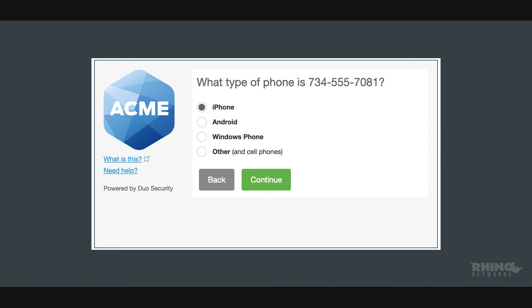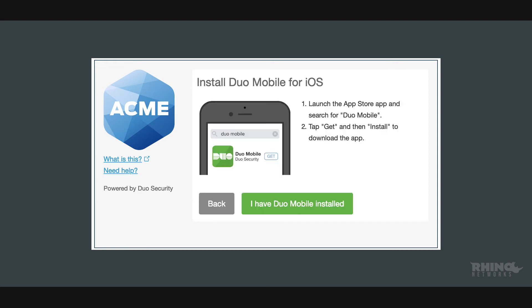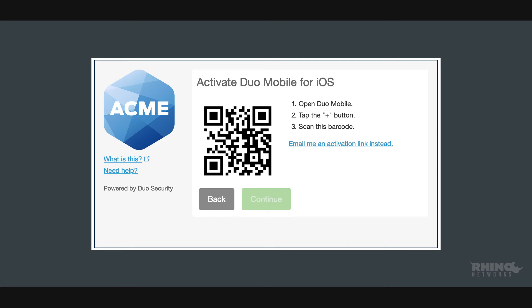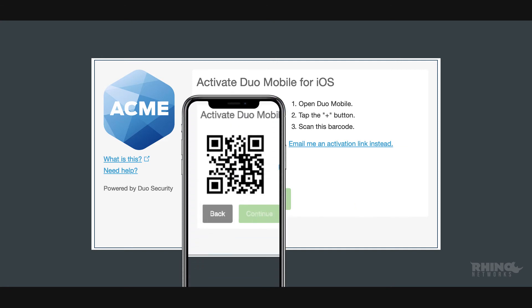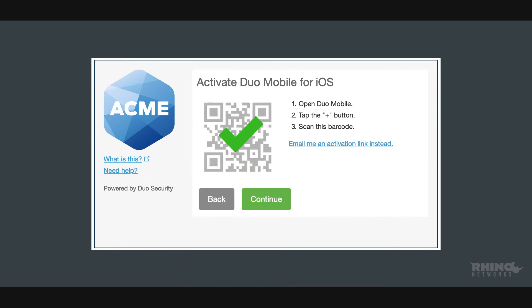Next, choose your device's operating system and press Continue. The screen will then show you instructions on installing Duo Mobile on your device. Once the app has been installed, click I have Duo Mobile installed. Then, activate your Duo Mobile app by scanning the barcode with the Duo Mobile app's built-in barcode scanner. The Continue button will then become clickable once the barcode has been scanned successfully.